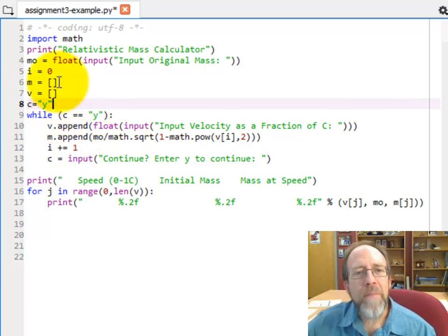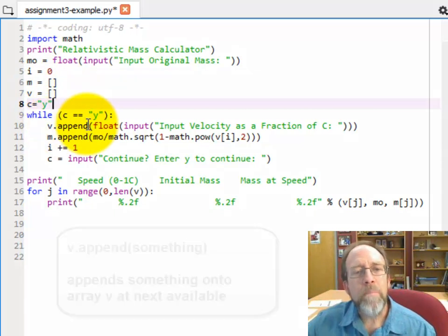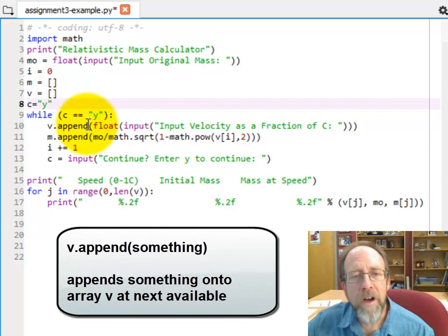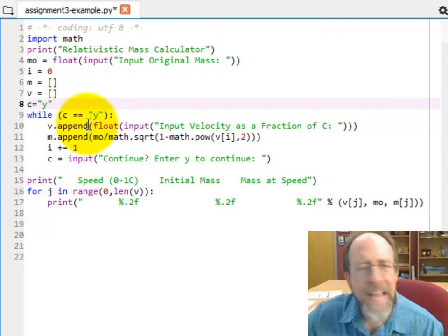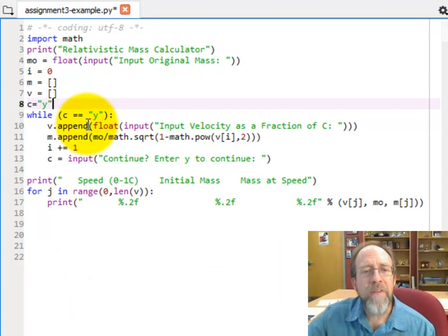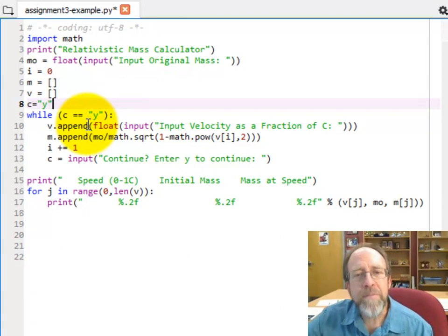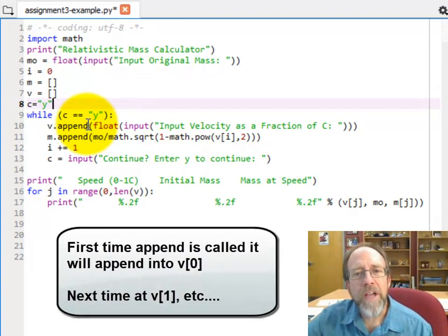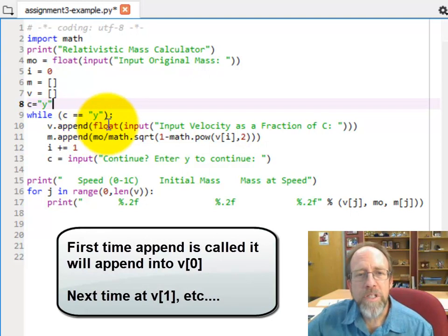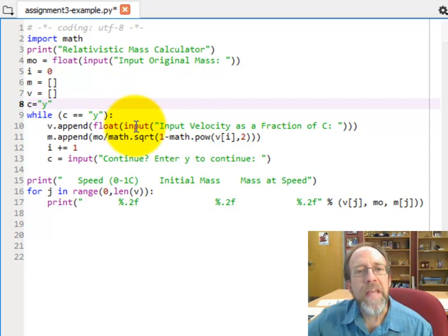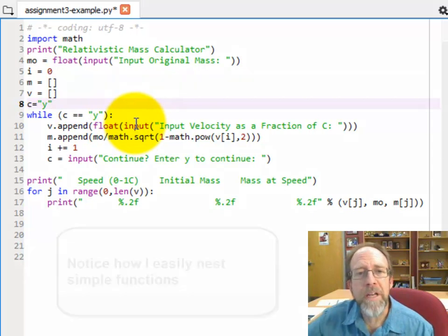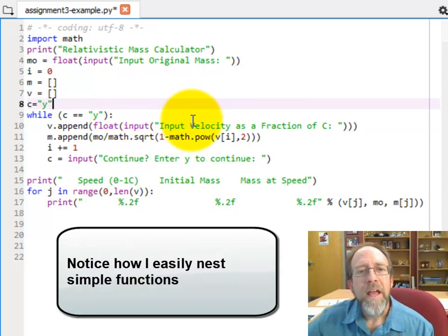So now I've got my v, remember v is an array, and I put v.append. Well, append is a function we often call the methods of an array, and it does exactly what you think it's going to do. It's going to append a value onto that empty array. And what value is it going to put? I have the float, which is a function which converts a string to a float, that I actually have inside of that the input function, which is going to be an input with a prompt.